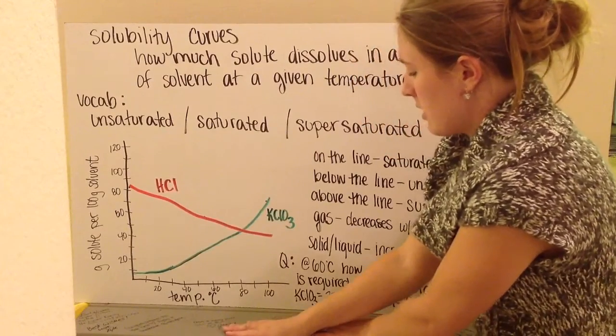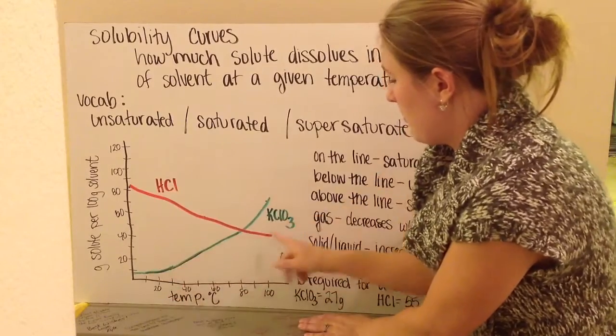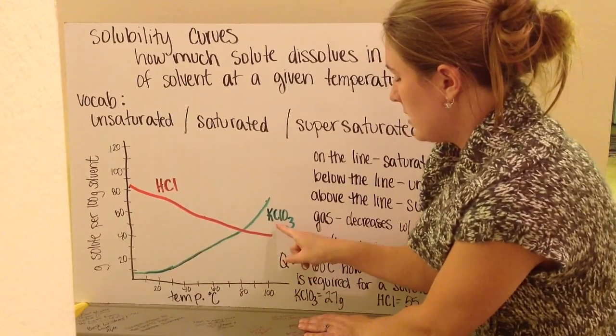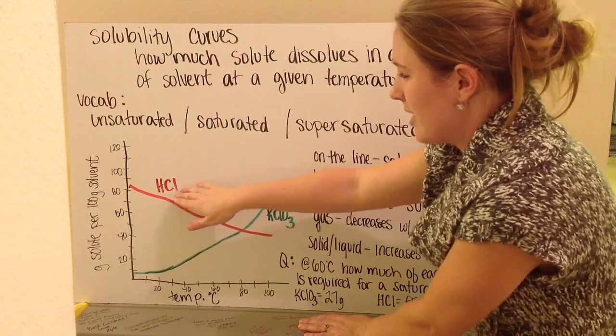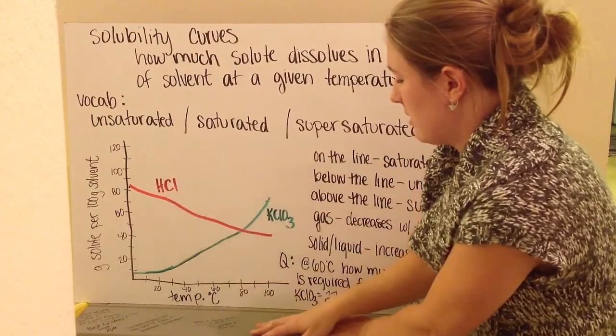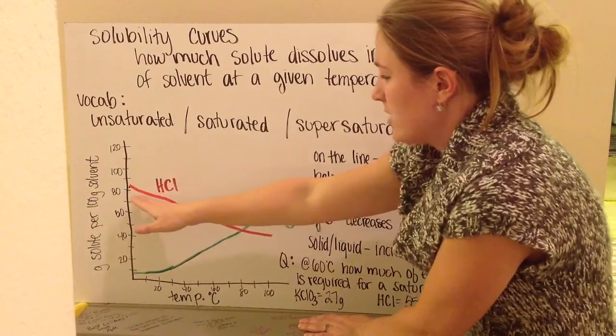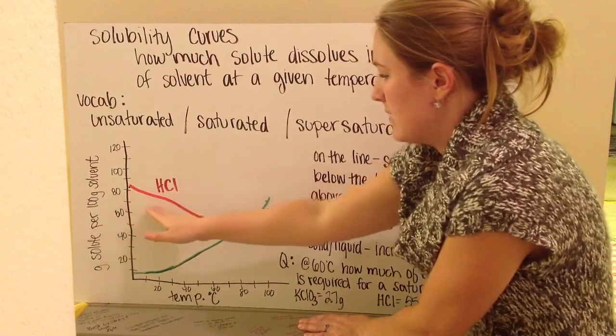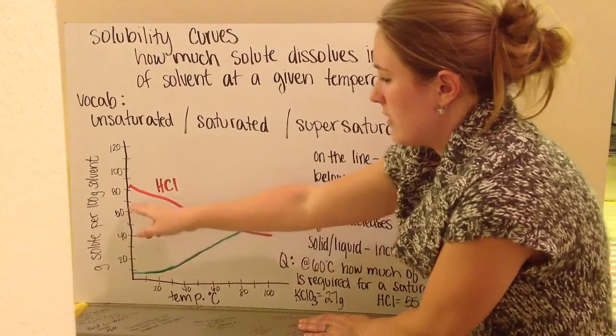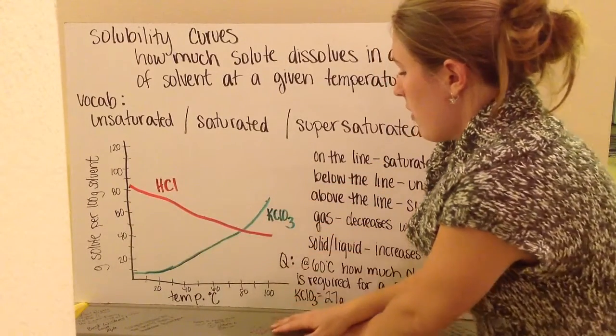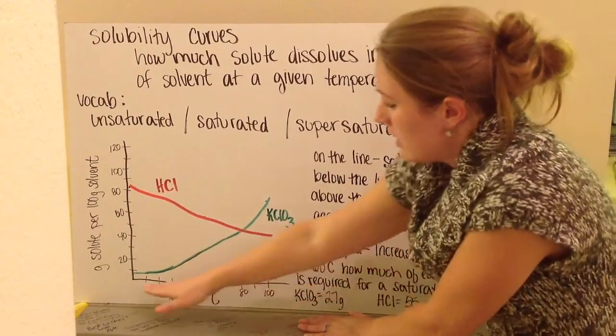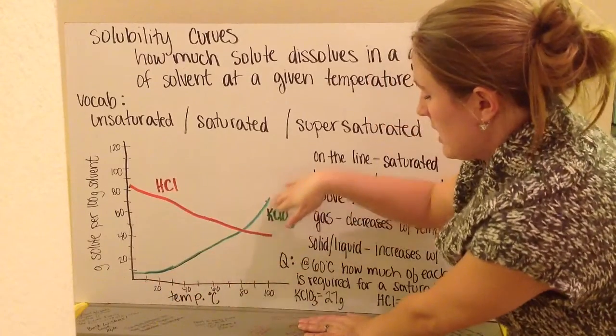What I have on my graph here is I have potassium chlorate and then I have hydrochloric acid. Okay. Hydrochloric acid has my line here. This is my grams of solute per 100 grams of solvent. This is its solubility curve. For my potassium chlorate, I have my solubility curve for it and it goes up.